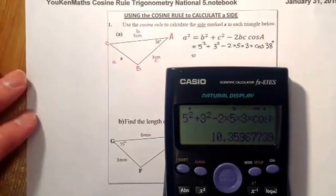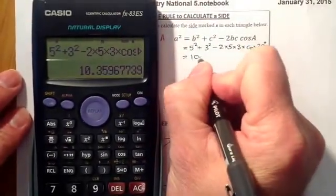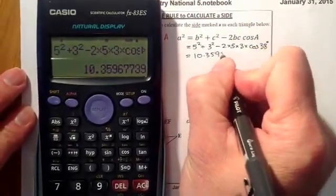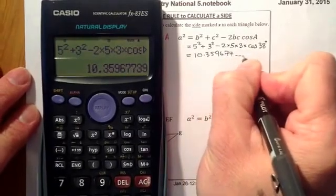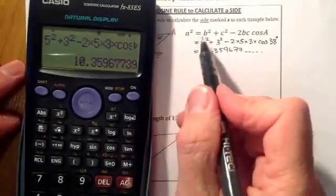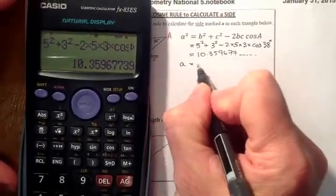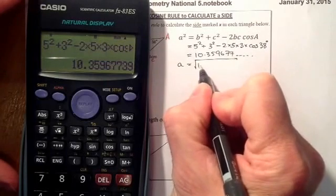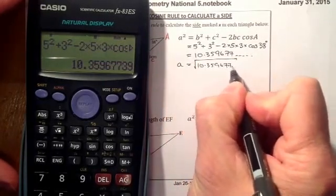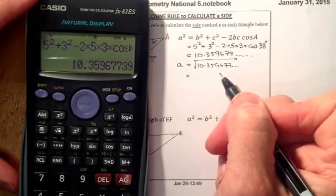And that should be a value for a². So I'll just write that down just now. So it's going to be 10.359677, and we've got some other characters beyond that. Remember, so that's a², and what I'll do is I'll take the square root of the value that I've got here. So that's going to be 10.359677, and from there that should give me the length of the side.